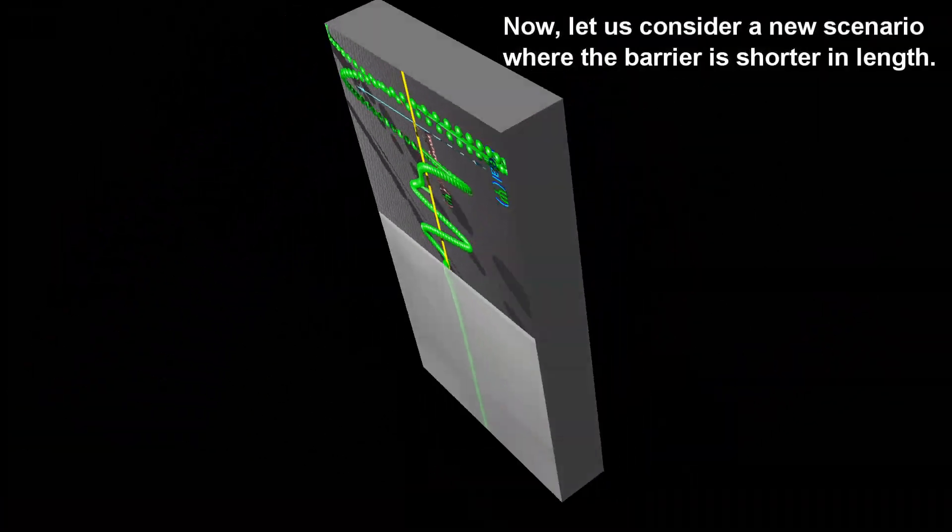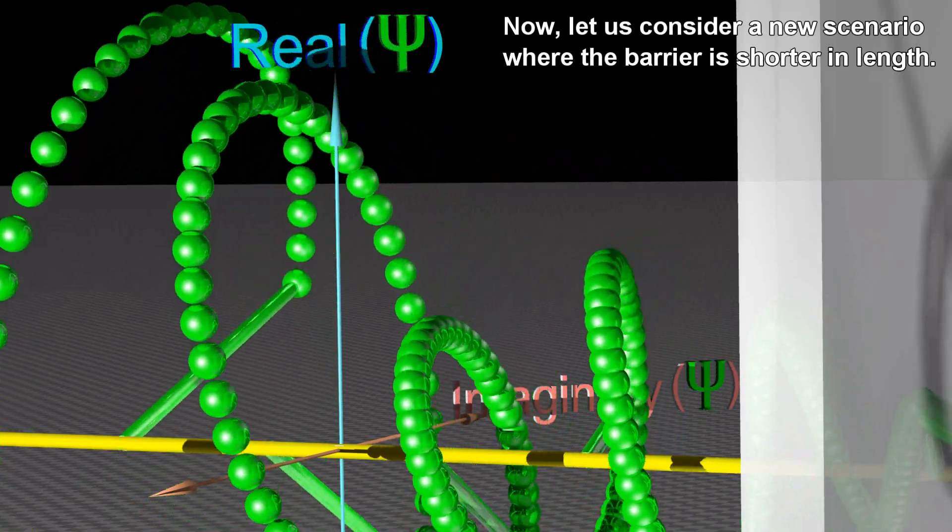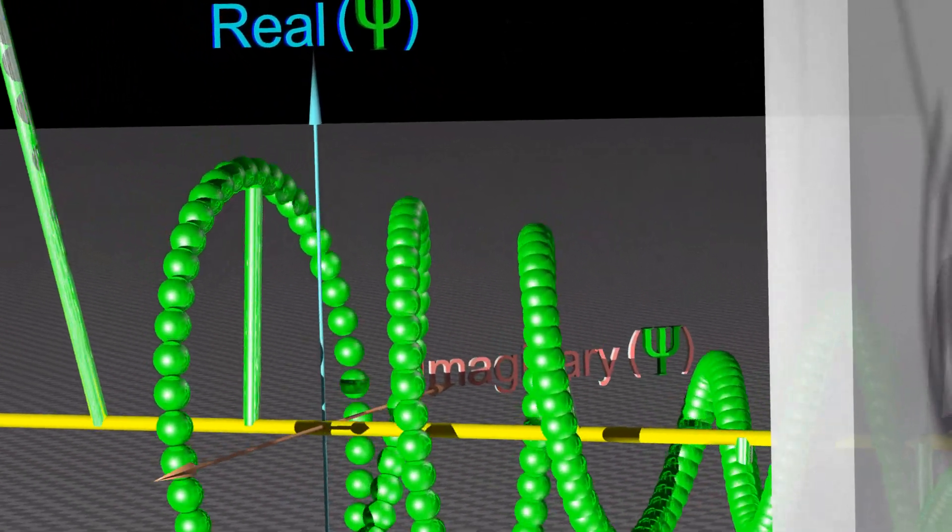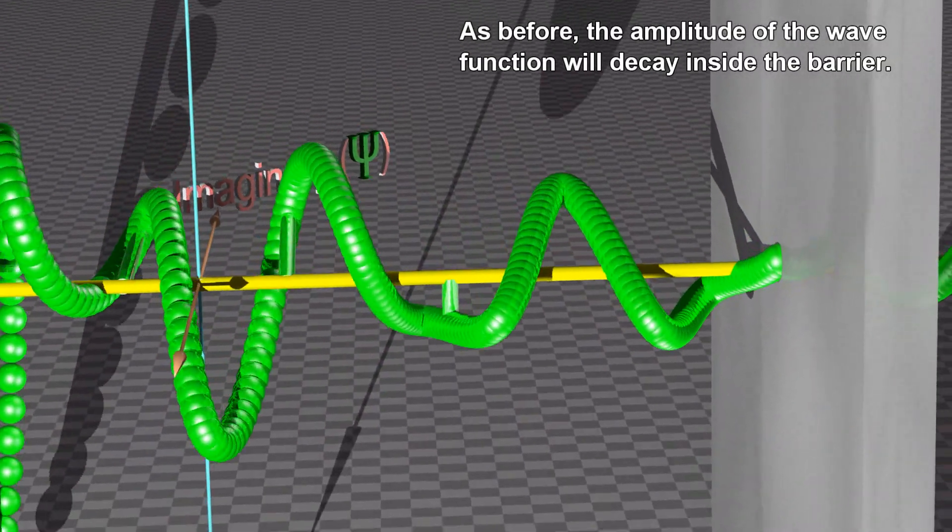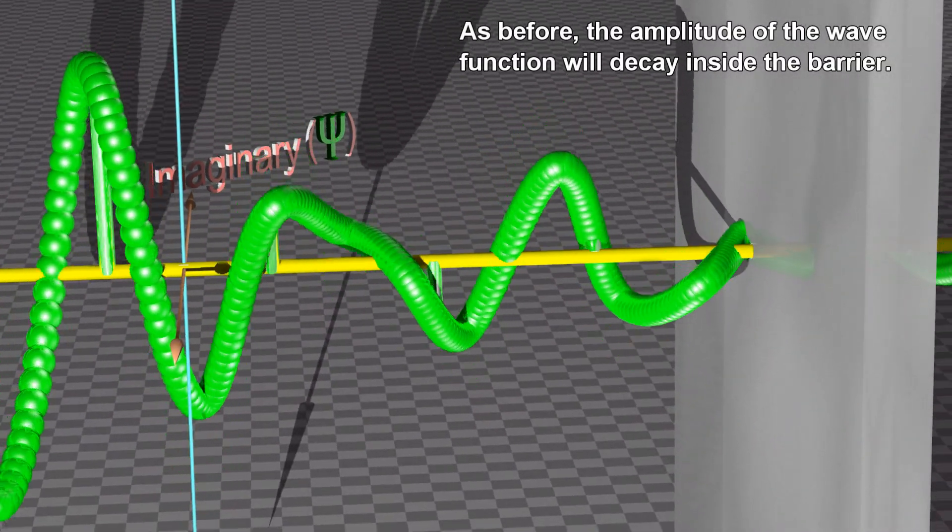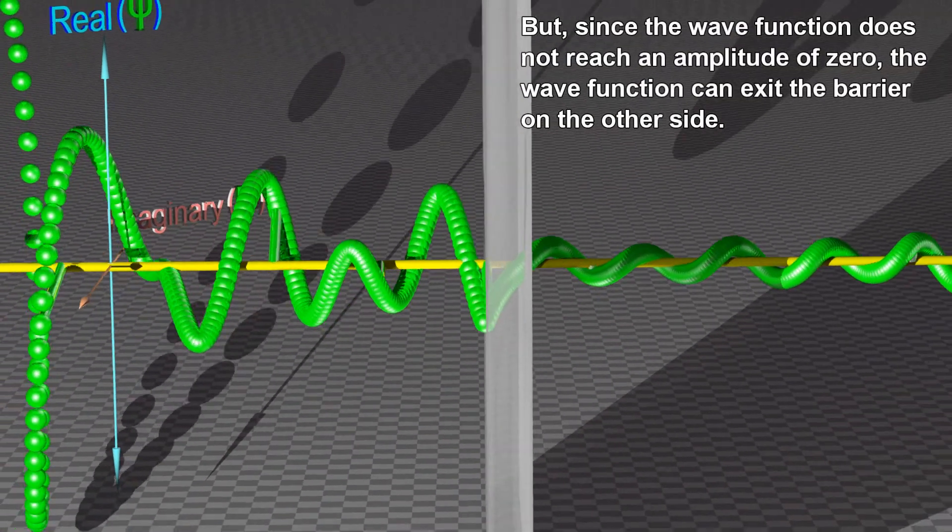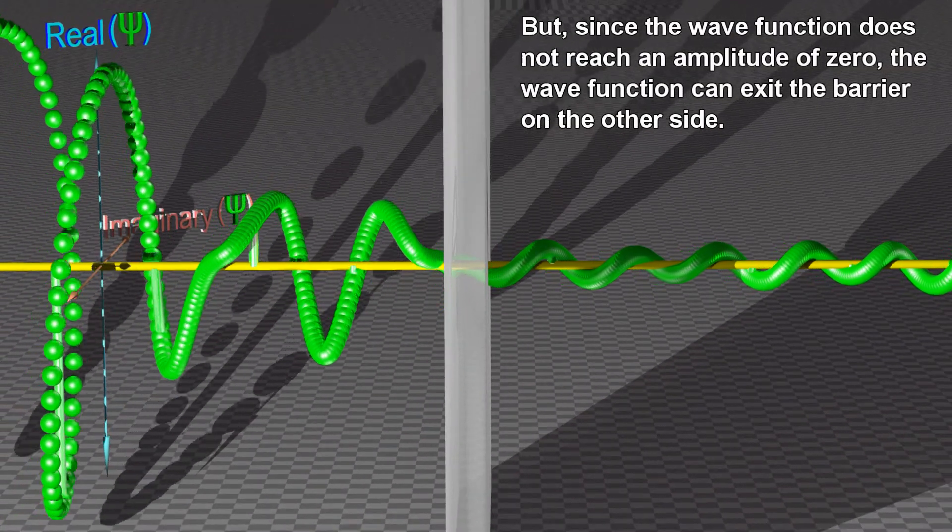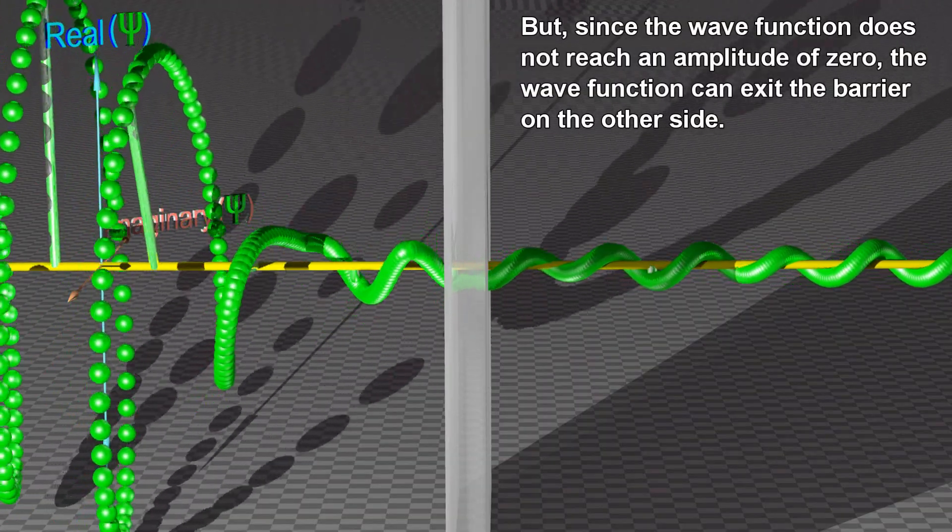Now, let us consider a new scenario where the barrier is shorter in length. As before, the amplitude of the wave function will decay inside the barrier. But since the wave function does not reach an amplitude of zero, the wave function can exit the barrier on the other side.